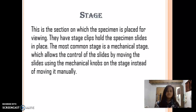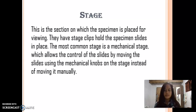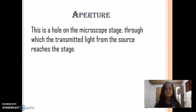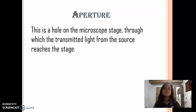Stage — this is the section on which the specimen is placed for viewing. Stage clips hold the specimen slides in place. The most common stage is the mechanical stage, which allows control of the slides by moving them using the mechanical knobs on the stage instead of moving it manually. Aperture — this is a hole on the microscope stage through which the transmitted light from the source reaches the stage.